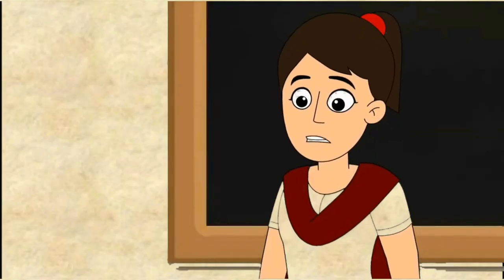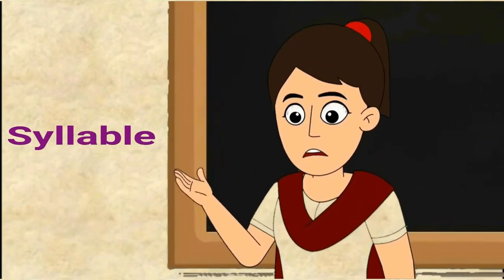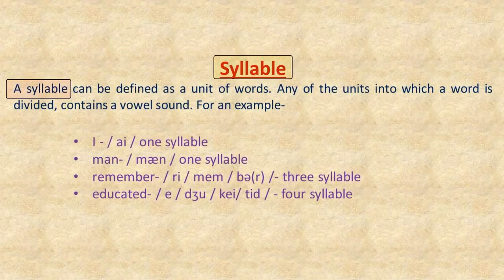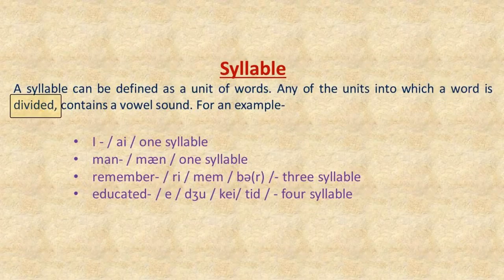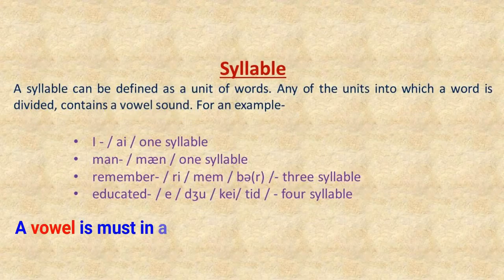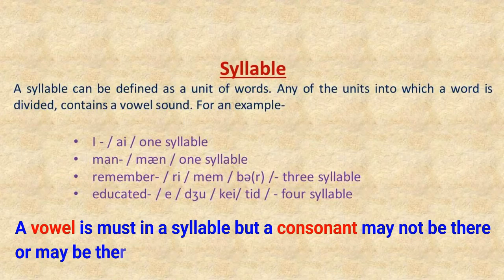Before discussing accent, I would like to discuss syllable. A syllable can be defined as a unit of words — any of the units into which a word is divided. Each unit contains a vowel sound. A vowel is a must in a syllable, but a consonant may or may not be there.